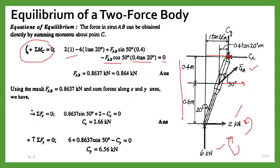Solving this equation, we get FAB = 0.864 kN. We should also apply summation of Fx = 0 and summation of Fy = 0.